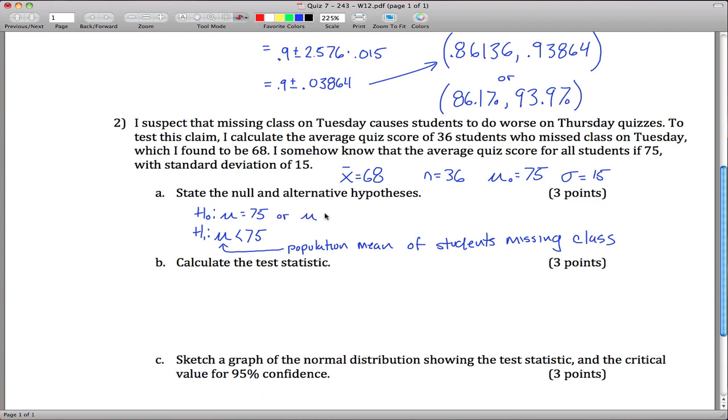So basically what this is saying, the null hypothesis is saying that missing class on Tuesday doesn't matter, that the mean is still the same, or maybe you do better or at least the same on the quiz.